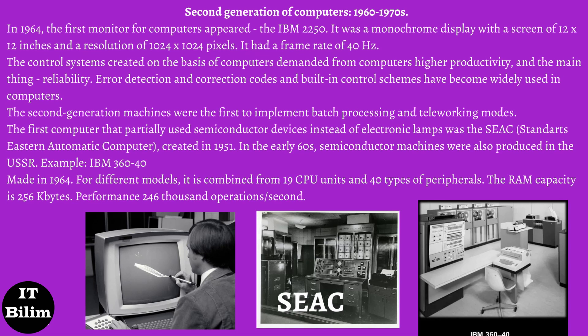In the early 1960s, semiconductor machines were also produced in the USSR. Example: IBM 360/40, made in 1964. For different models, it is combined from 19 CPU units and 40 types of peripherals. RAM capacity: 256 KB; performance: 246,000 operations per second.